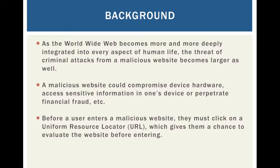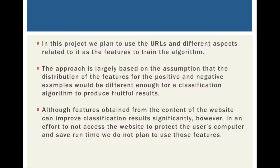Before a user enters a malicious website, they must click on a Uniform Resource Locator URL, which gives them a chance to evaluate the website before entering. In this project, we plan to use the URL and different aspects of the URLs we treat as features to train this algorithm. The approach is largely based on the assumption that the distribution of features for the positive and negative examples would be different enough for a classification algorithm to produce fruitful results.